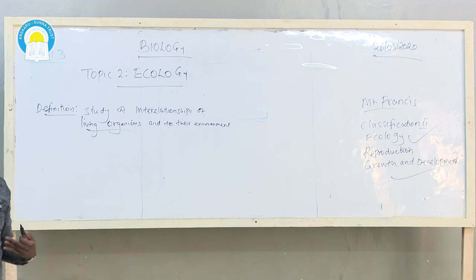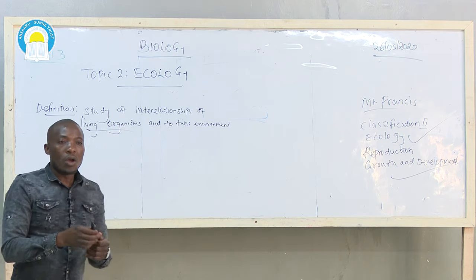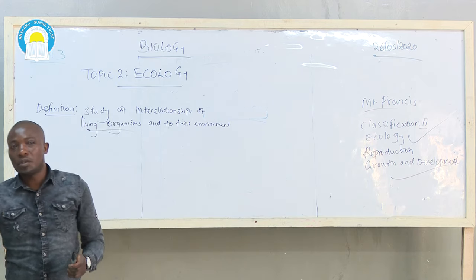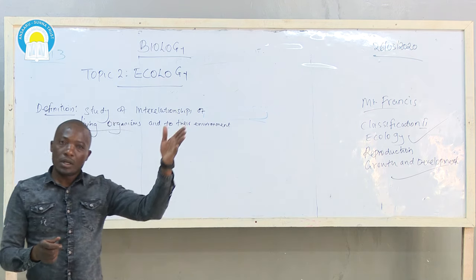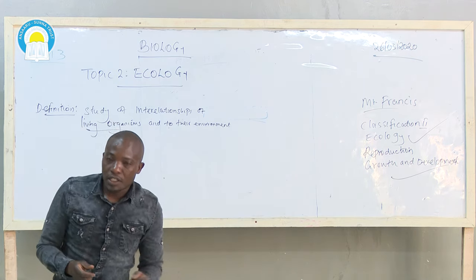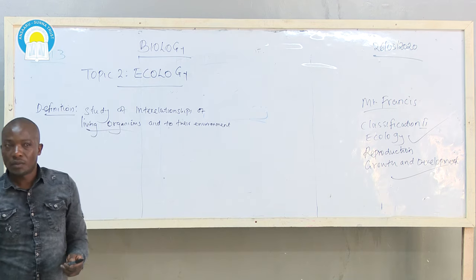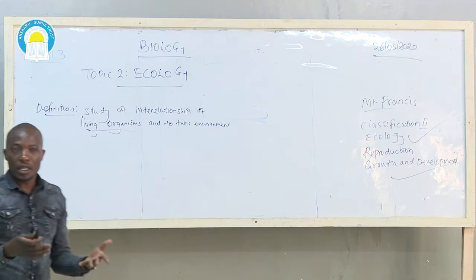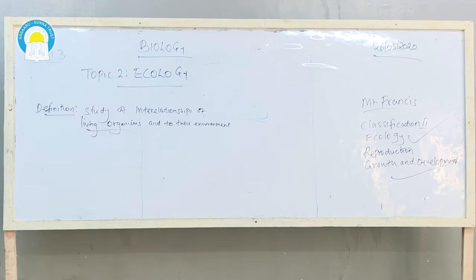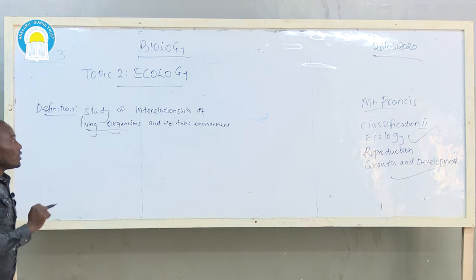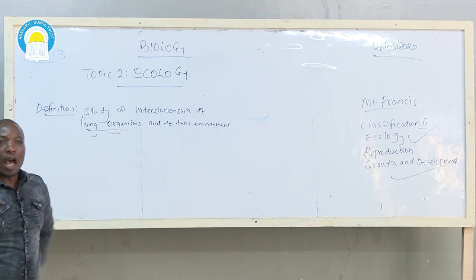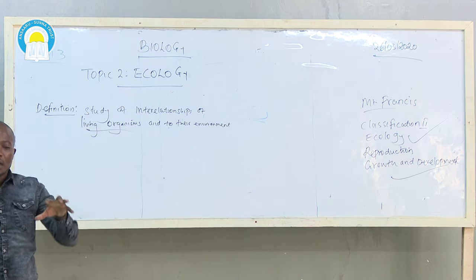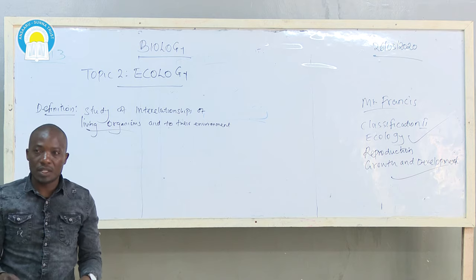For example, you as a human being — how are you relating with the immediate environment? How are you relating with plants? Do you care about deforestation? Do you care about poaching? Do you pollute the environment? The environment here means the immediate surrounding.